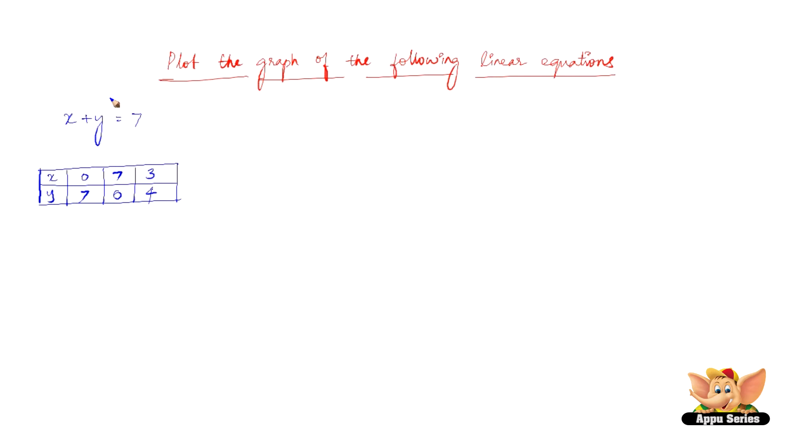Now let's quickly check that here in this equation. 0 plus 7 is 7. 7 plus 0 is 7. And 3 plus 4 is 7, so it's all satisfied. So now let us plot the graph for the same.